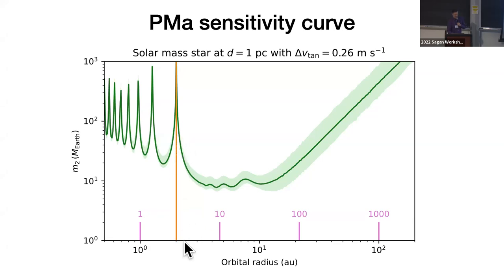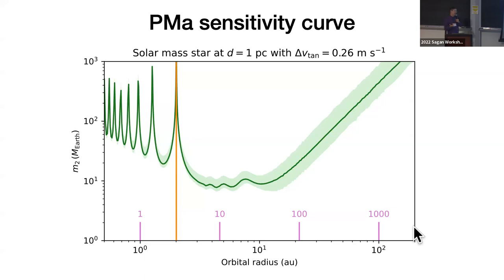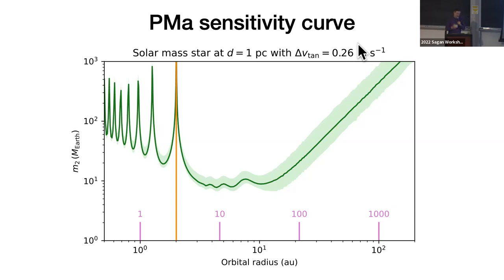At the longer orbital period side, you are limited by the fact that you subtract the Hipparcos-Gaia long-term proper motion, and in doing so you subtract part of the signal — part of the curvature of the star's trajectory — so you are less sensitive to long-period companions. Basically, when you observe a tangential velocity anomaly, you know there is a companion whose mass is somewhere in a green shaded area, but you don't know exactly where. There's a higher probability in the most sensitive part, but it can also be a longer-period, more massive companion due to this degeneracy.